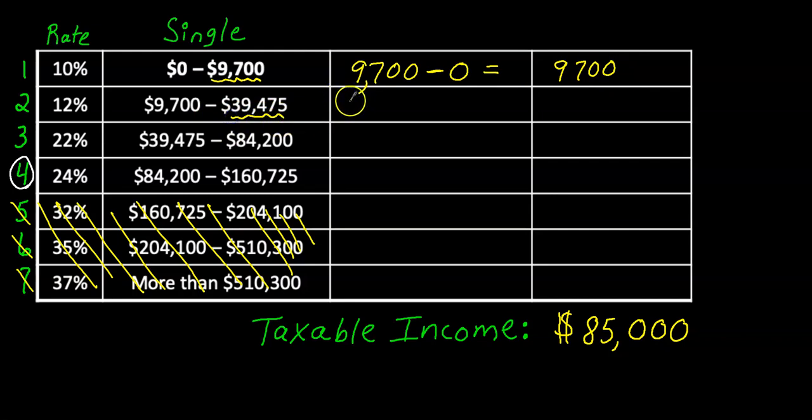I'm going to take this $39,475 and I will subtract it from this number, $9,700. And that equals, I've done this already, it's $29,775.